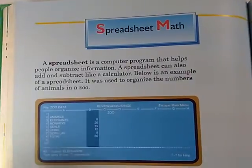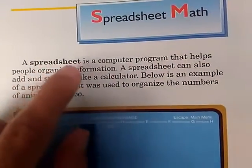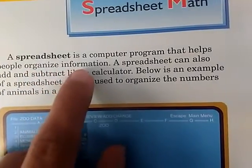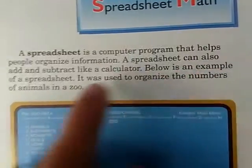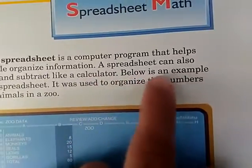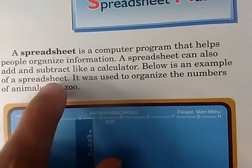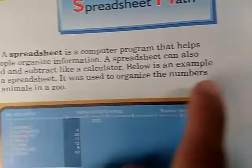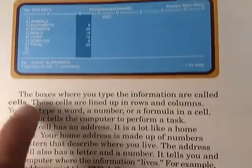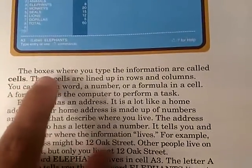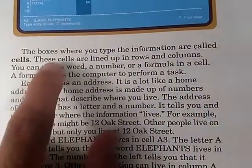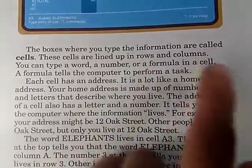Spreadsheet math. A spreadsheet is a computer program that helps people organize information. A spreadsheet can also add and subtract like a calculator. Below is an example of a spreadsheet. It was used to organize the numbers of animals in a zoo. The boxes where you type the information are called cells. These cells are lined up in rows and columns.